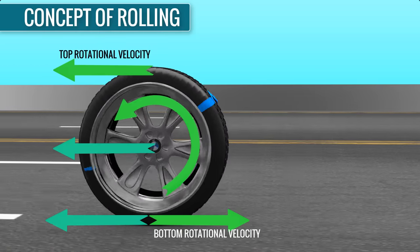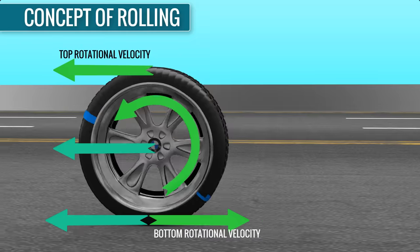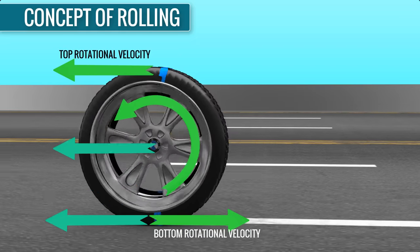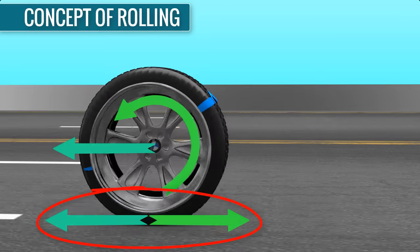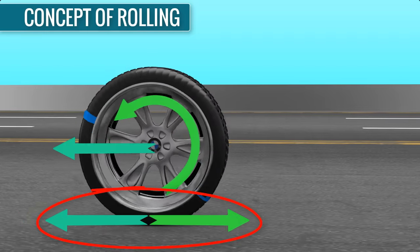For non-slip rolling conditions, the sum of the translational and rotational velocities at the contact point should be zero. Just keep this simple principle in mind and you will very easily be able to understand the steering mechanism.